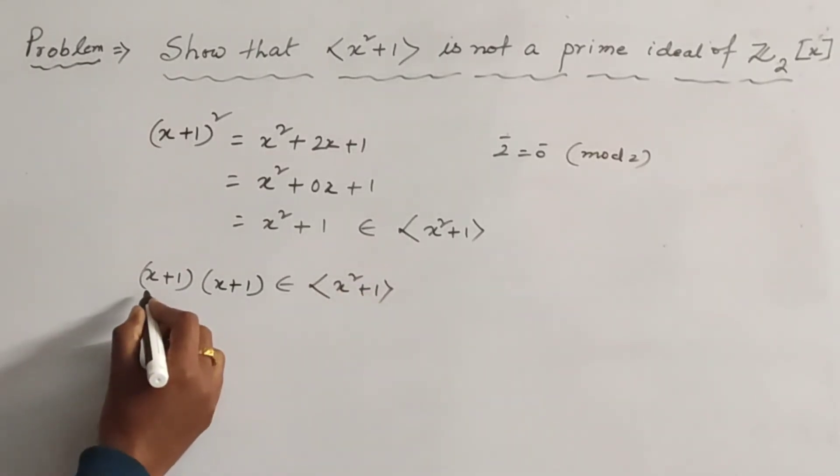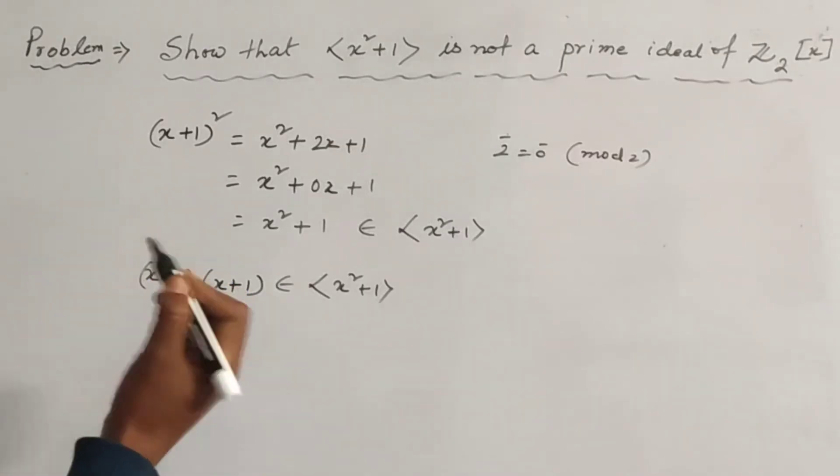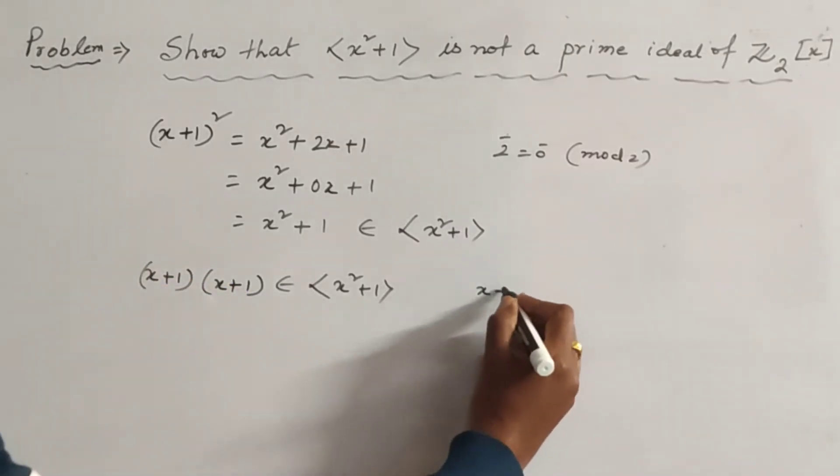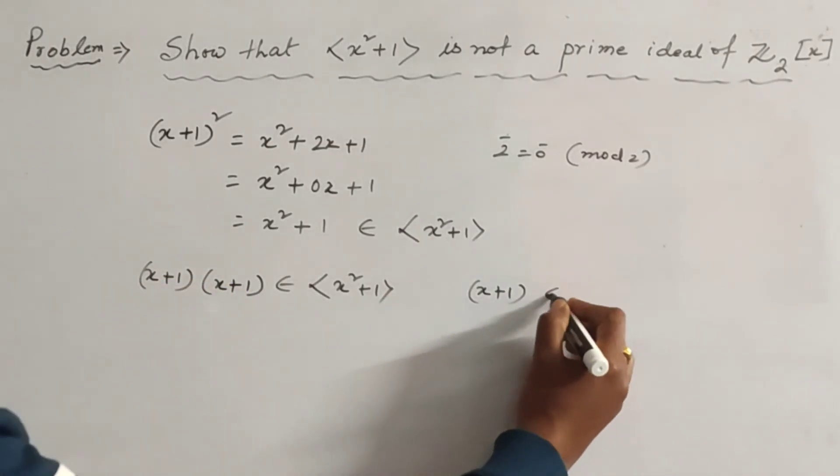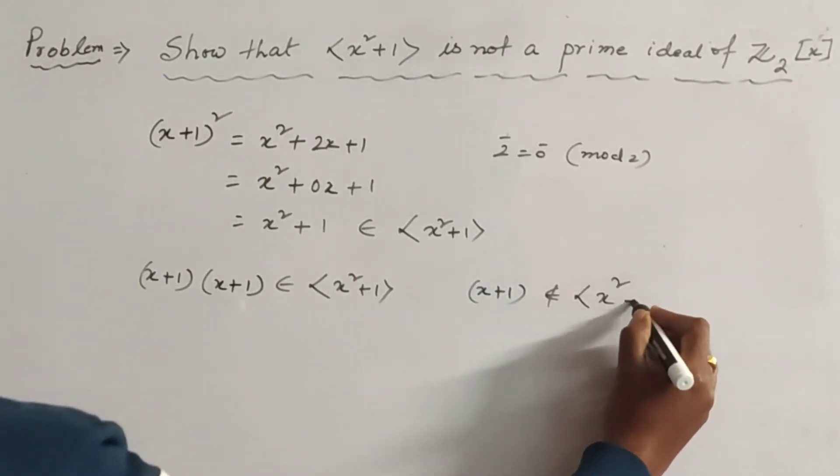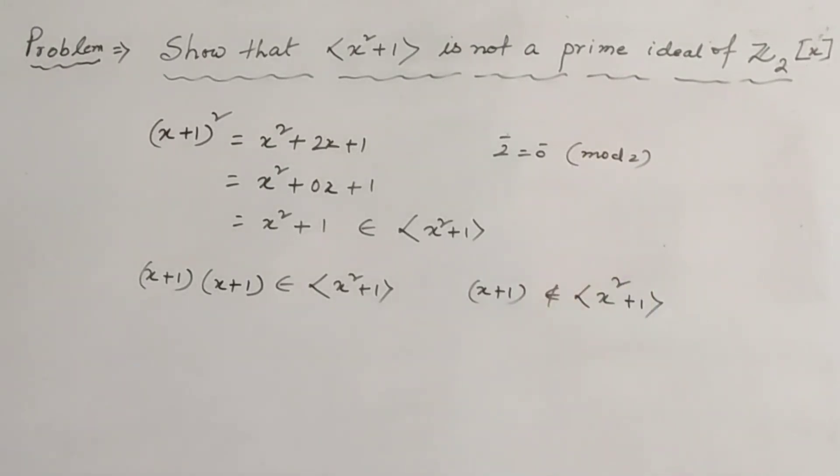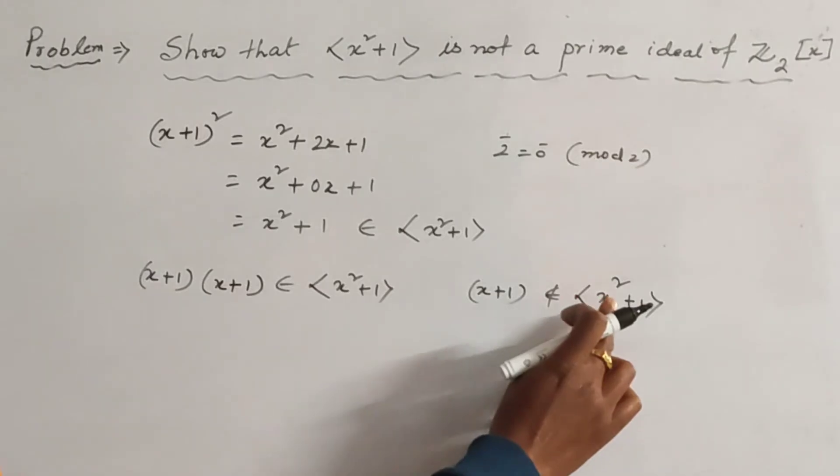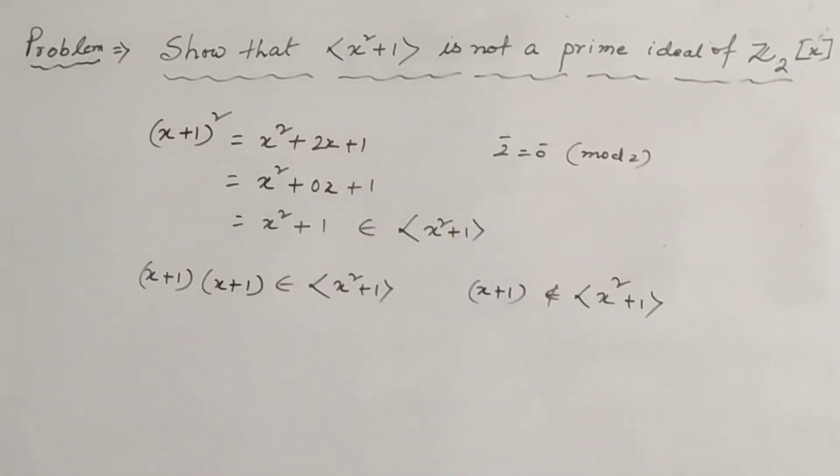And we see that (x + 1) does not belong to the principal ideal generated by x² + 1, because (x + 1) cannot be expressed in the form of x² + 1.